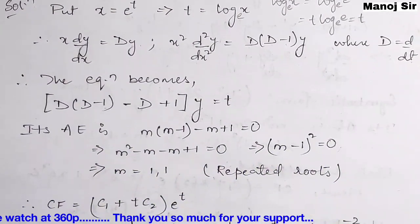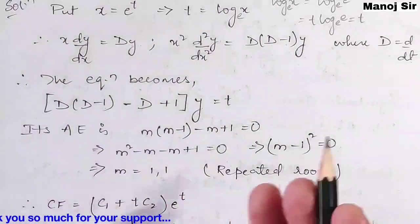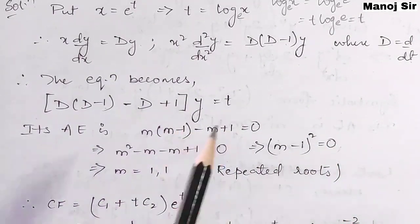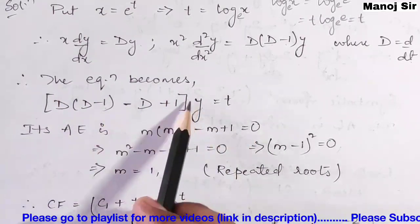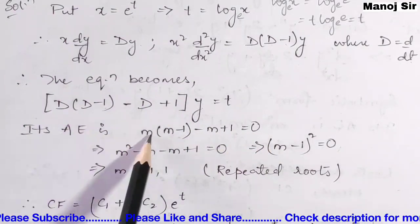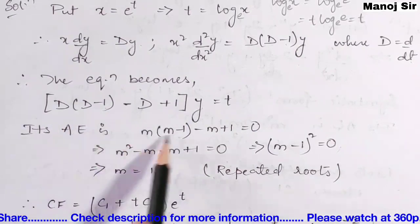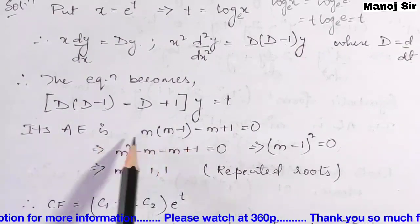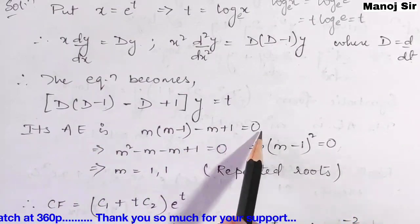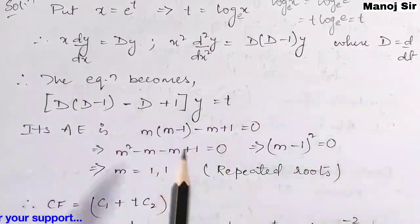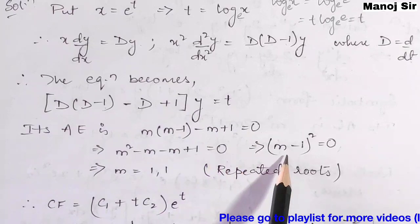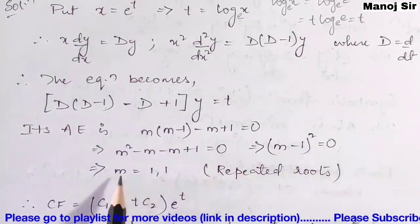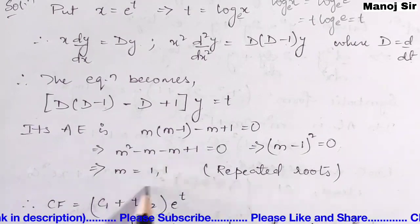To find the auxiliary equation, we equate the coefficient of y to zero, writing m instead of D. So: m(m minus 1) minus m plus 1 equals 0. Opening the bracket gives m² minus m minus m plus 1 equals 0, which simplifies to (m minus 1)² equals 0. Solving this gives m equals 1, 1.